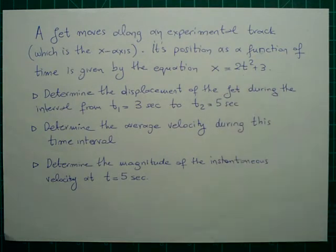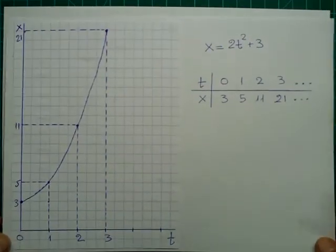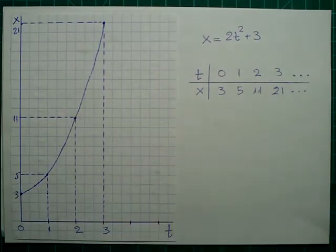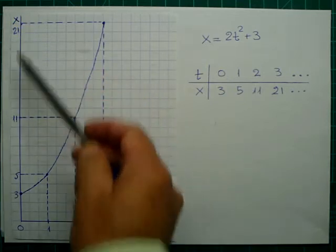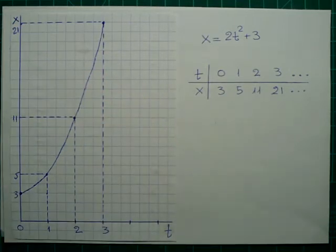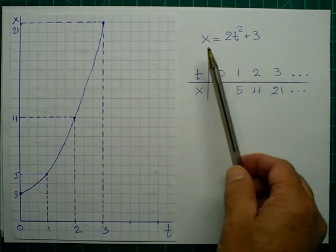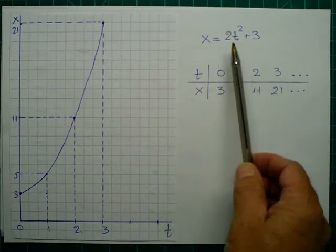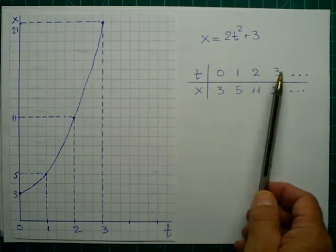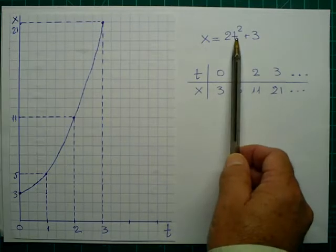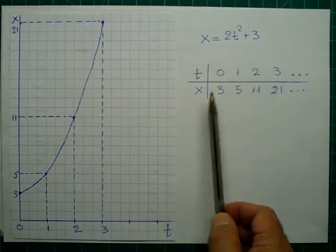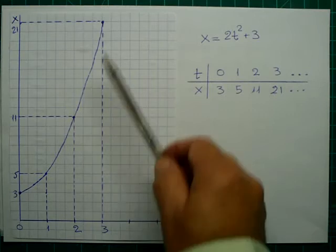First of all, I'm going to sketch the graph of this function. Well, this is the graph of the function. This is x and this is t. So in this equation I substitute 0, 1, 2, 3 for t and I get the x values, and this is, as you can see, a parabola.